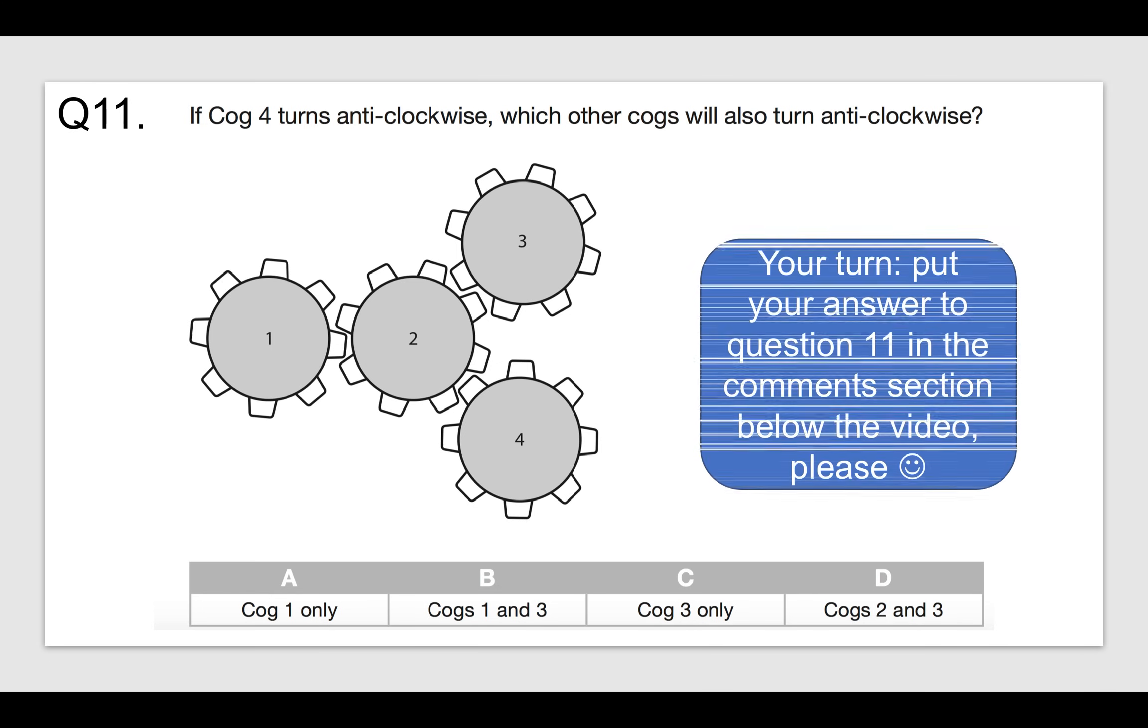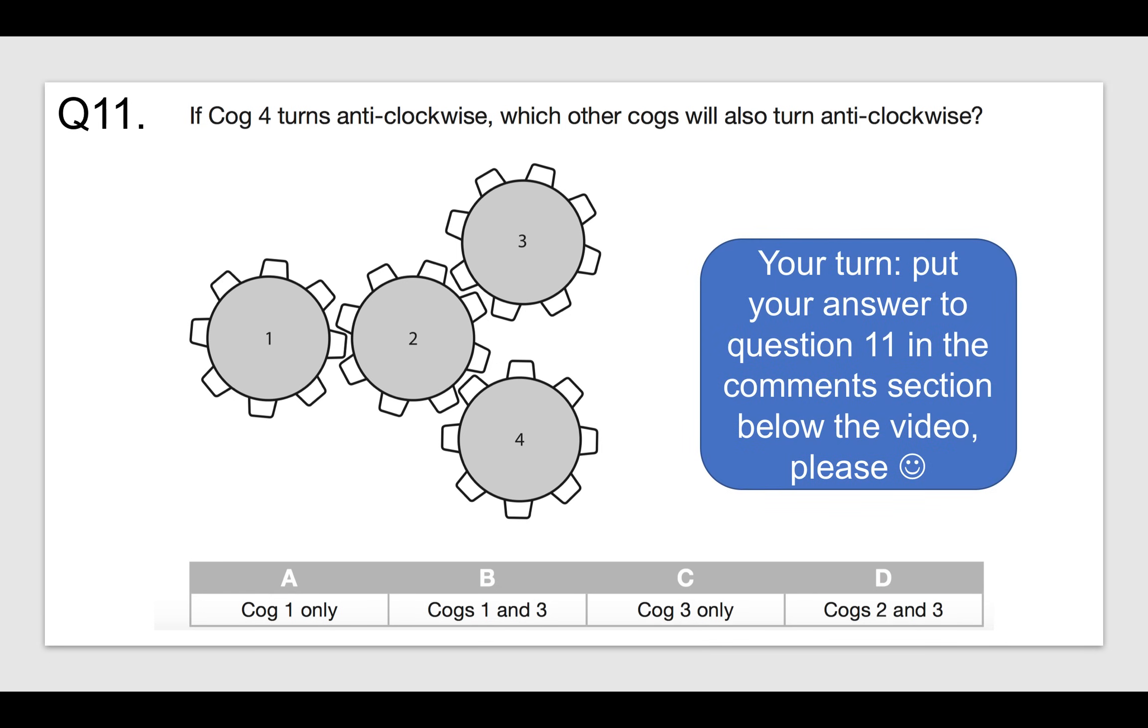Question eleven. I want you to have a go at this. If cog four turns anticlockwise, which other cogs will also turn anticlockwise? So is it cog one only, cogs one and three, cog three only, or cogs two and three? So cog four is there. If this turns anticlockwise, you know which way that is now. Which other cogs will also turn anticlockwise? Please put your answer to question eleven in the comments section below the video, please.